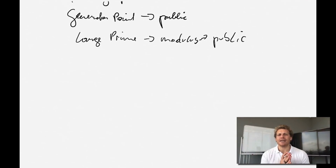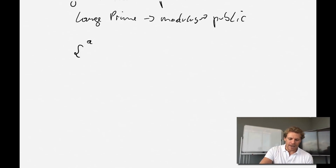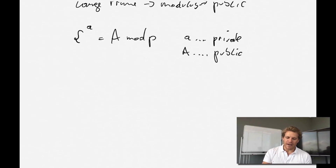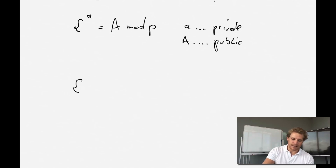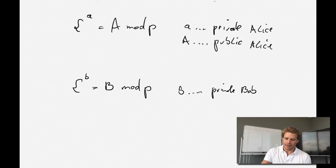Two parties pick a private key, and this private key is the exponent on the entire function. So we have alpha — the generator point — raised to lowercase a (Alice's private key), taken mod P, giving us uppercase A, which is Alice's public key. Bob does the same: alpha to the lowercase b, mod P, gives uppercase B — Bob's public key.